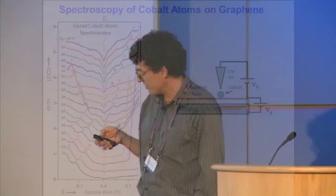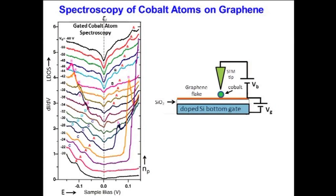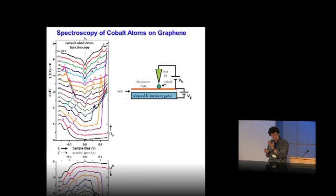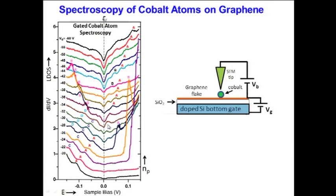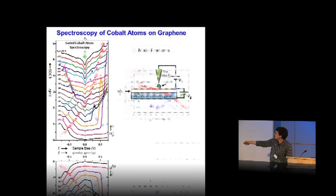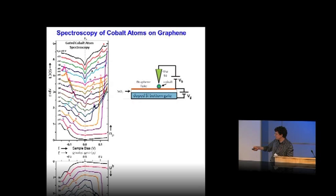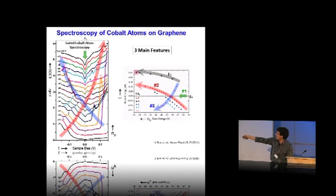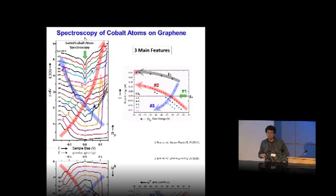Here I show the electronic structure of a single cobalt atom sitting on top of a gated graphene device: dI/dV as a function of sample bias. Each curve shows increasing p-doping as we go up. There are three main features. The first is a dip at the Fermi level that is gate-independent — we believe that dip is an inelastic feature due to the vibrations of the cobalt atom. The other features change with gate voltage. I've plotted the energy of all these resonances versus gate voltage, also showing how the Dirac point moves. Some features move with the Dirac point — those are density of states features embedded in the band structure due to that impurity.